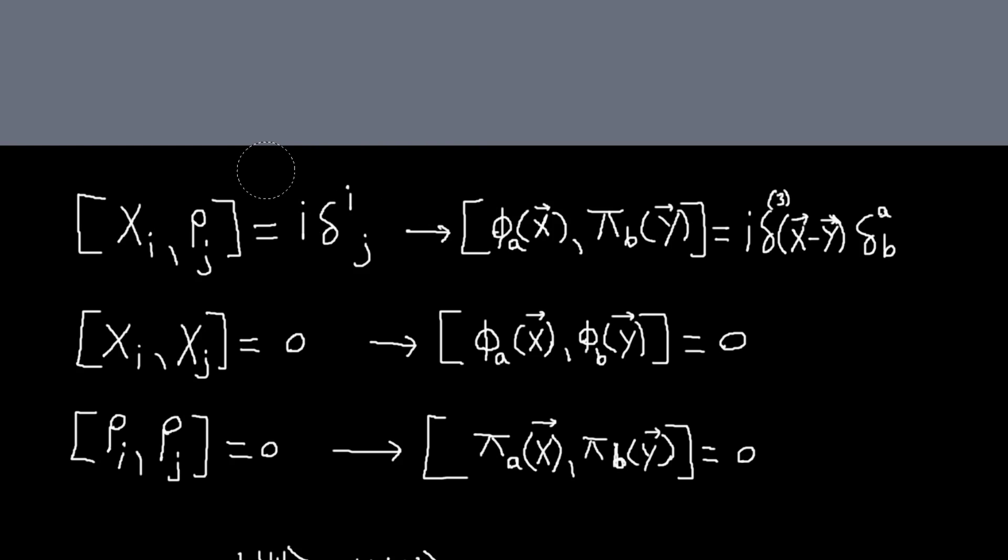Here we're using h-bar as one. The coordinates and momenta corresponding to different coordinates commute, hence the delta ij. The different position operators all commute, different conjugate momenta commute.